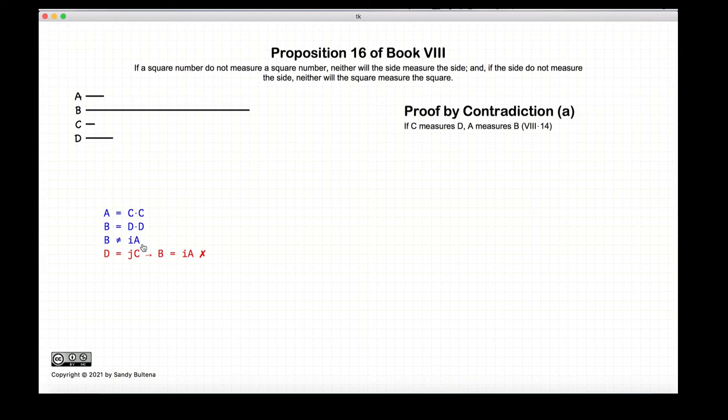But our original assumption is that A does not measure B, so therefore C does not measure D. That's the first part of the proof.